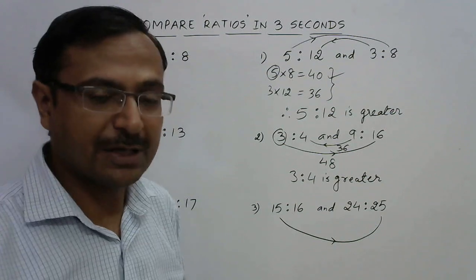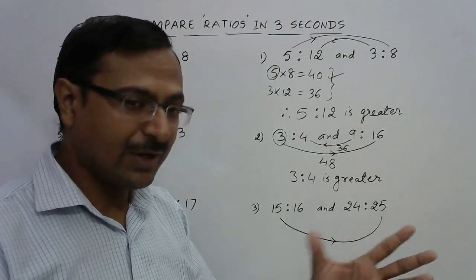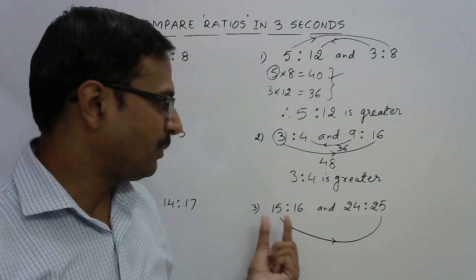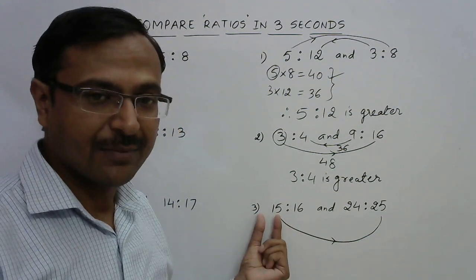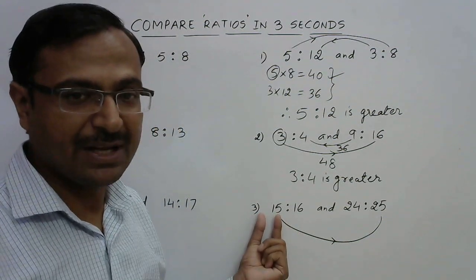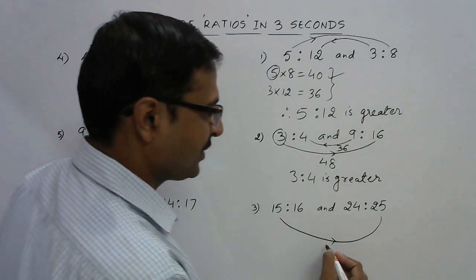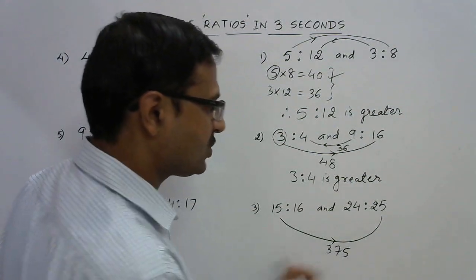Multiplication by 25 is very easy: just put two zeros, that is 1500, then half of that 750, half of that 375. So 375 is the product of these two.